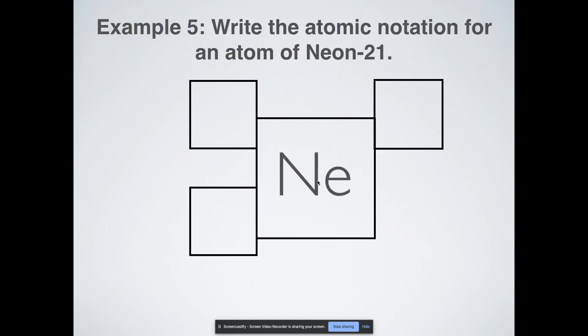So NE is neon. We know that. 21 is going to be my mass number because it was given to me. What number is neon on the periodic table? Number 10. And it does say it's an atom, so that means the charge would be 0. And then here's another little fact. A lot of times if this is 0, you don't even include it. It's understood to be 0 unless you have a charge written in the corner here.